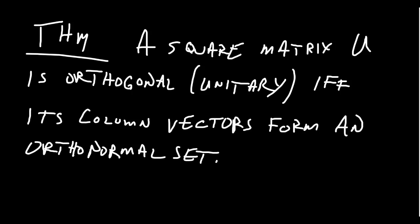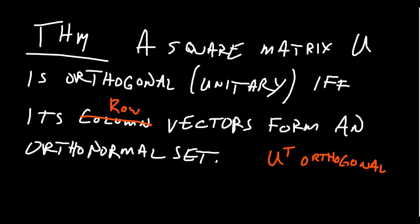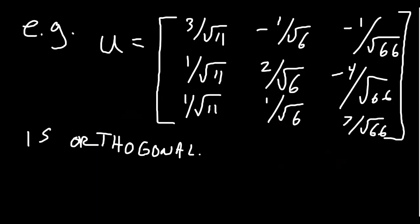Whenever a matrix is orthogonal, its inverse is its transpose — and the transpose is itself an orthogonal matrix. For unitary complex matrices, the same holds with the conjugate transpose. Because of that, it's also true that a matrix is orthogonal if and only if its row vectors likewise form an orthonormal set. So you can look at either columns or rows — both will be orthonormal sets.